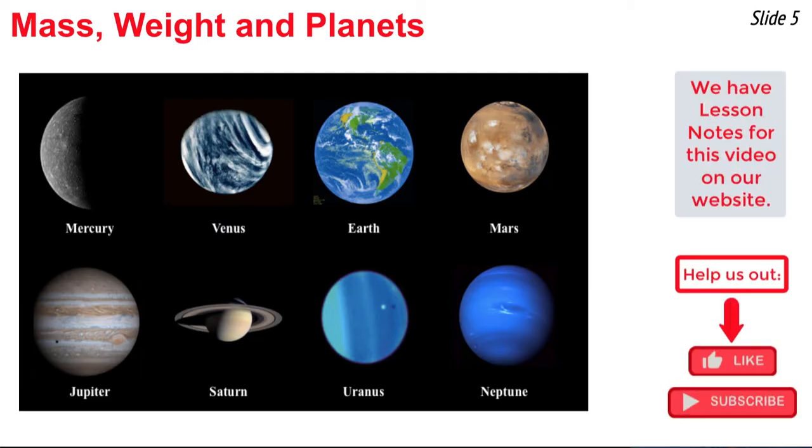So mass does not depend upon location, but weight does. Let's consider the weight of a 50 kilogram object on the various planets of the solar system. We're going to begin with the innermost planet, Mercury, and work ourselves outwards to Neptune.